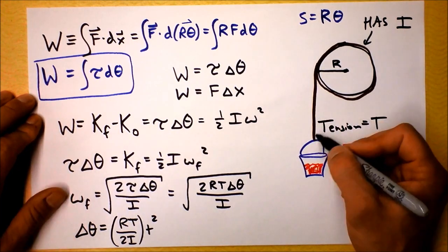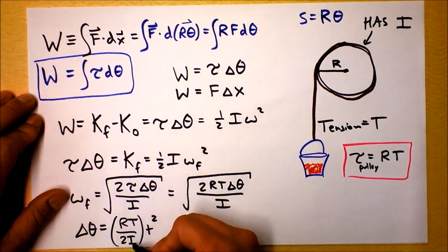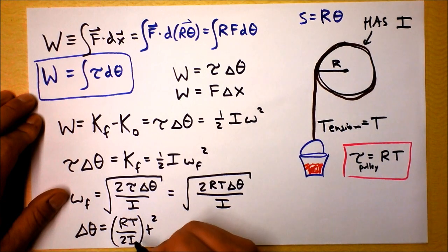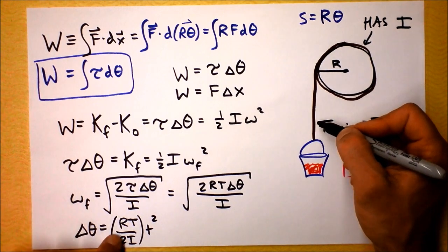What about if the moment of inertia is bigger? If the moment of inertia is bigger, then the angle will be smaller.